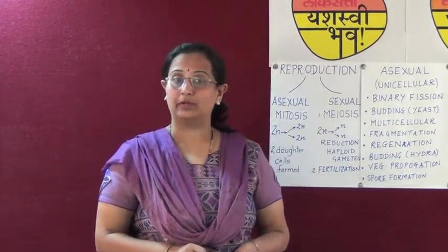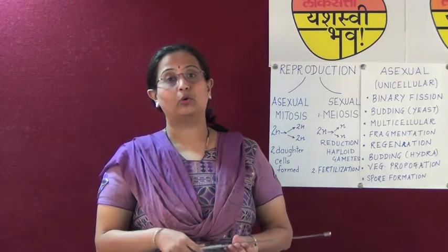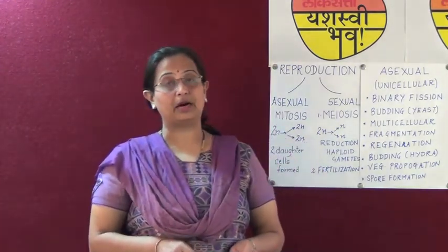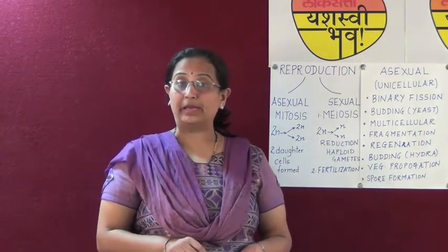After fertilization, the zygote divides several times. The ovule develops into a seed and the ovary develops into a fruit. Thus, the seed that is formed starts growing to produce a new plant.